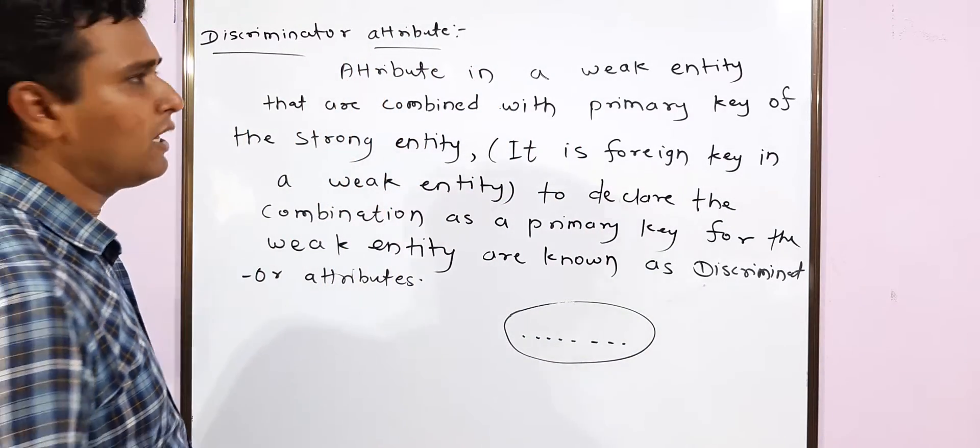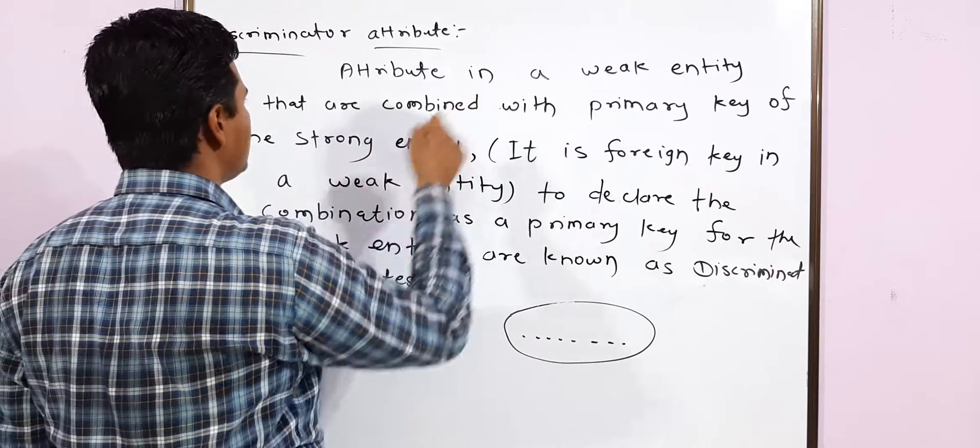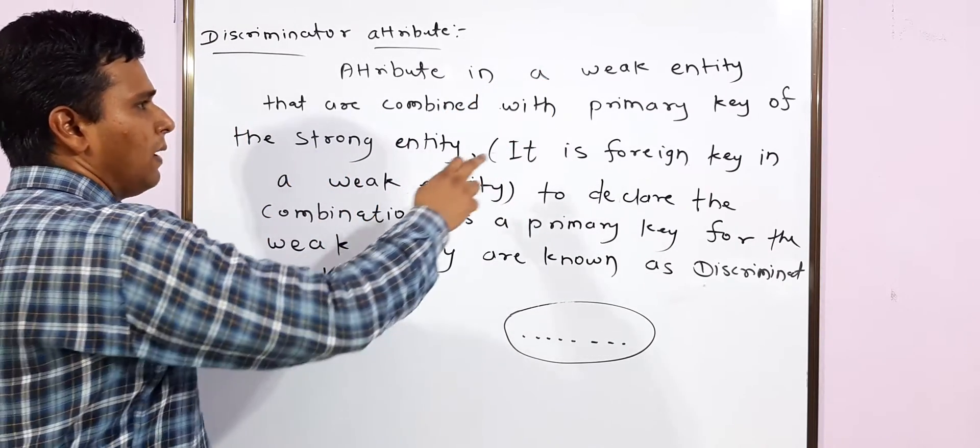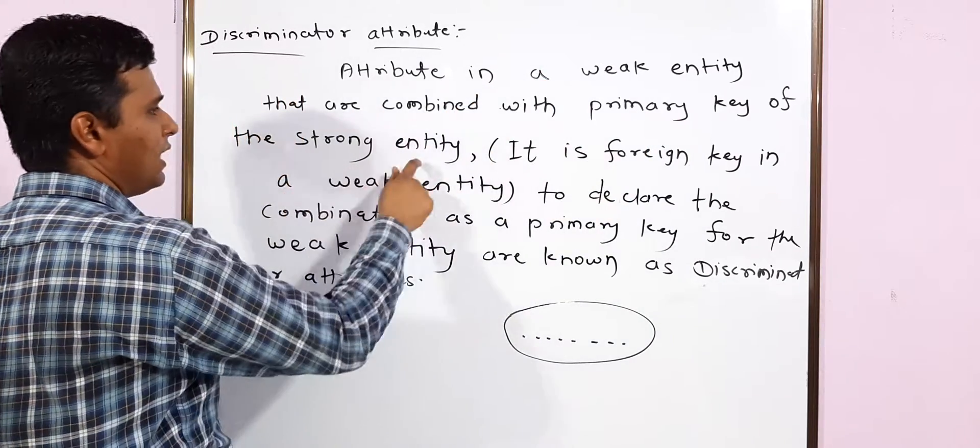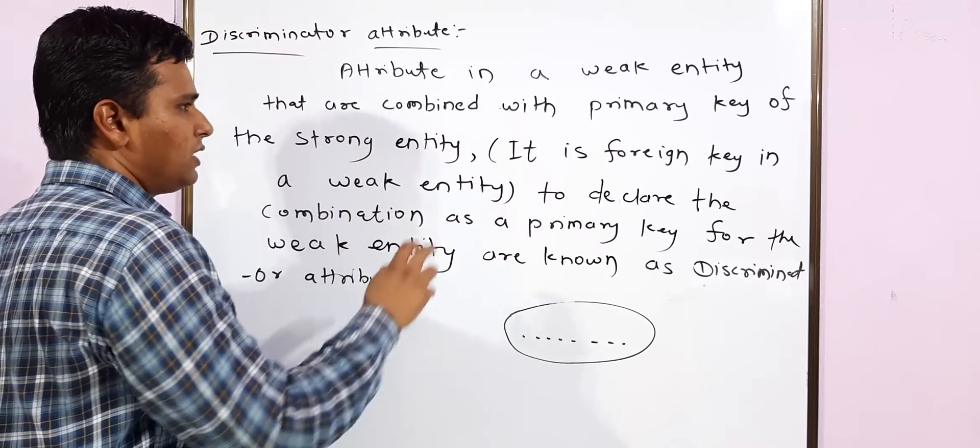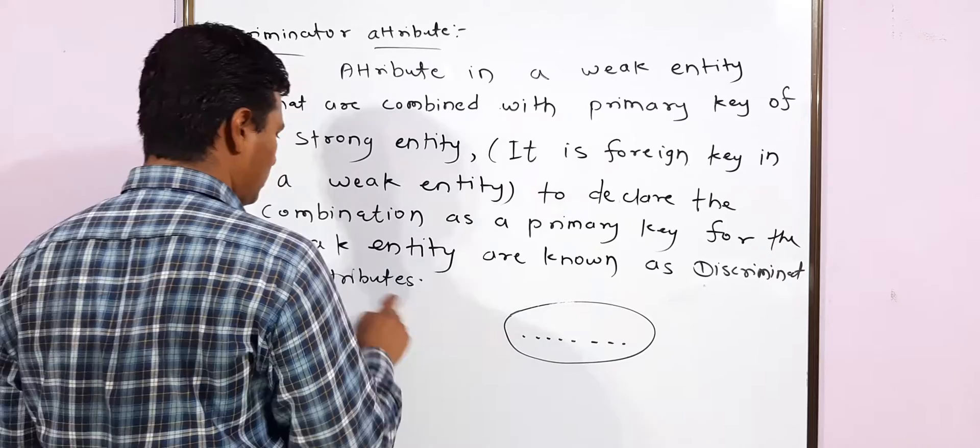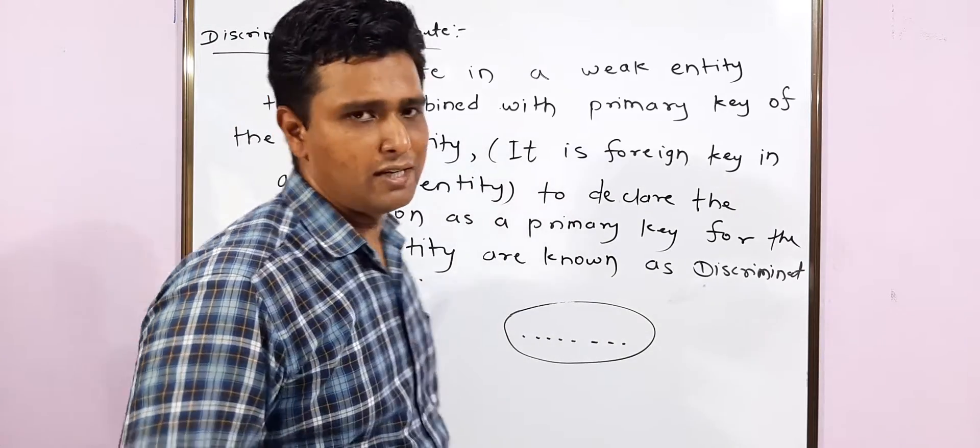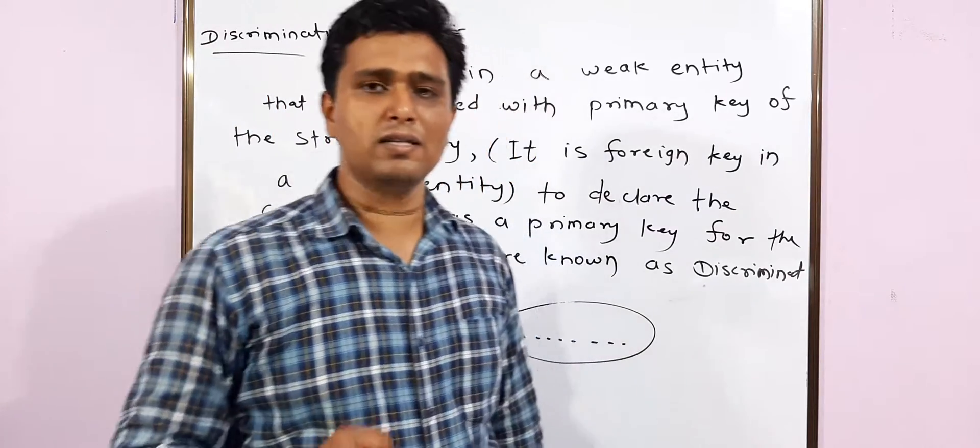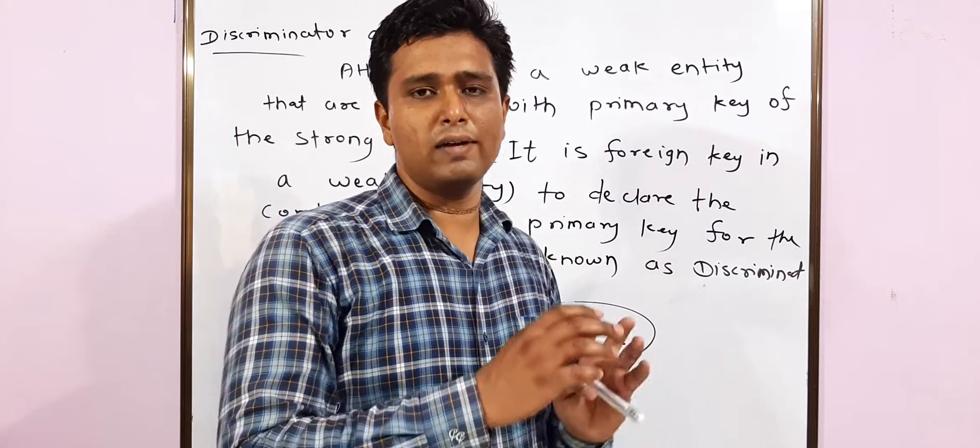Now look at the definition of discriminator attribute: attributes in a weak entity that are combined with primary key of strong entity. It is a foreign key in the weak entity to declare the combination as a primary key for the weak entity. These are known as discriminator attributes.